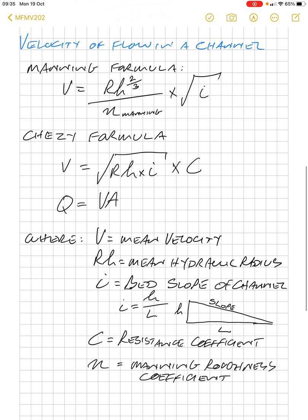All right, now we need to talk about how do you calculate the velocity of flow in a channel. Two main formulas that we use: the Manning formula and the Chezy formula. The Manning formula: velocity is equal to the hydraulic radius to the power of two-thirds divided by the Manning constant, multiplied by the square root of i. And the Chezy formula: velocity is equal to the square root of the hydraulic radius times i, and then multiplied by a constant C.